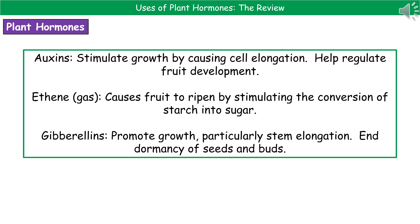Gibberellins can also be used to end the dormancy of seeds and buds. So make sure you know these three examples of hormones: auxin causes cell elongation and regulates fruit development; ethene ripens fruit by converting starch into sugar; and gibberellins promote growth, particularly in the stem, and end dormancy in seeds and buds.